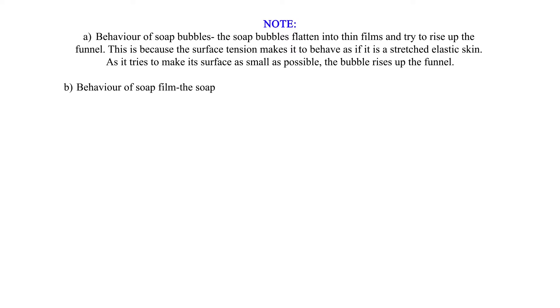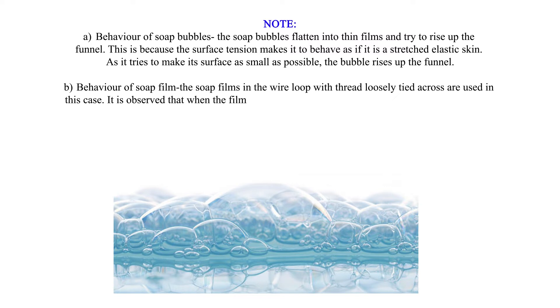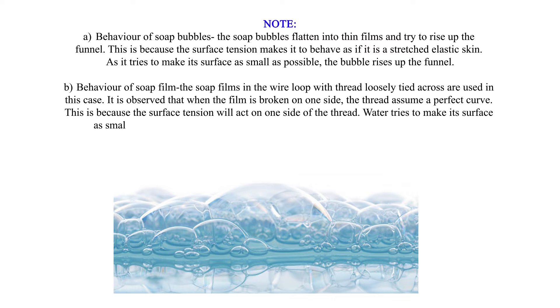B. Behavior of soap film: The soap films in the wire loop with thread loosely tied across are used in this case. It is observed that when the film is broken on one side, the thread assumes a perfect curve. This is because the surface tension will act on one side of the thread. Water tries to make its surface as small as possible, thus pulling the thread in such a way that it forms a perfect curve.